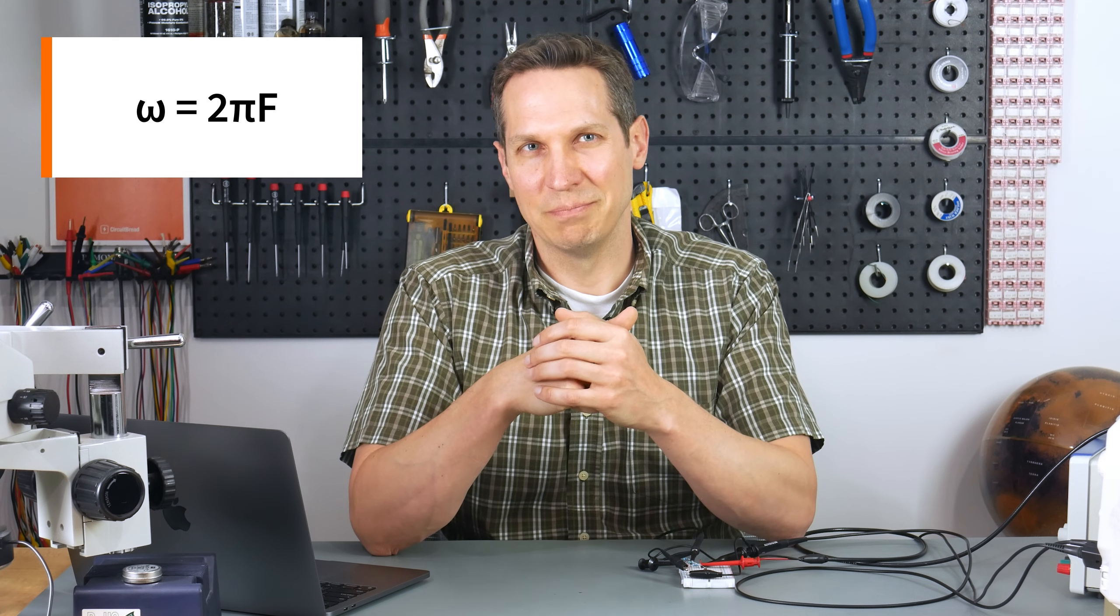So omega is just, yes, two pi f. There we go. And then C obviously is the capacitance. And so you can actually model and when you're doing AC analysis, you can model a capacitor with that one over j omega C.